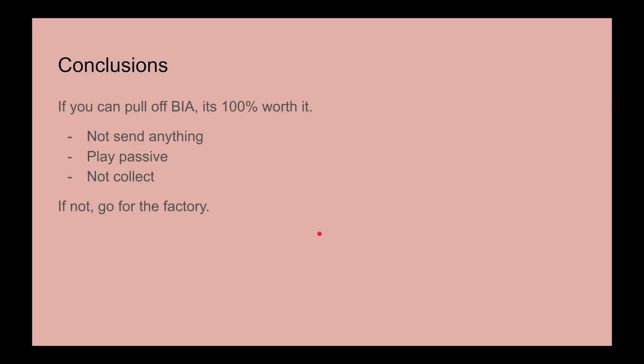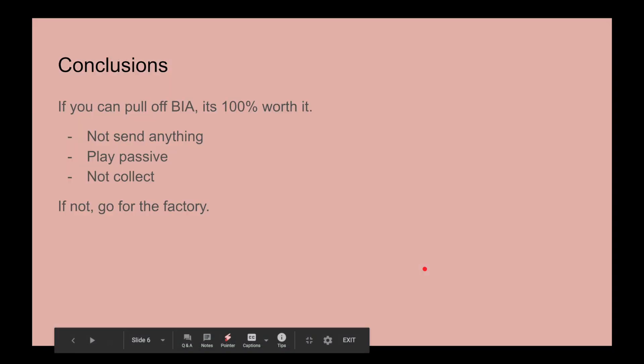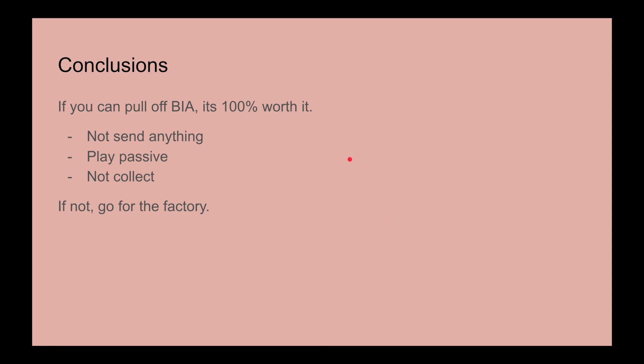Let's look at these conclusions. If you can pull off a BIA, it's 100% worth it. You're making a lot more money for the price you're spending. If you cannot send anything, play passive, and the opponent doesn't force you to collect from the BIA, you are making money. The BIA is 100% the play. So basically, if you're on a late game map like Dreadbloom Cave, it's going to be a lot better to go for that BIA just because you're going to be able to get that more money later.